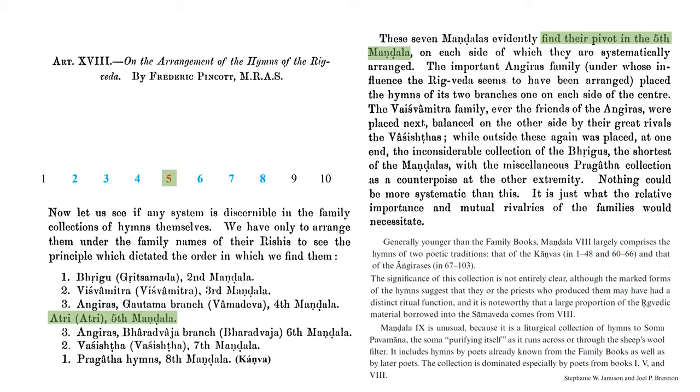The important Angirasa family, under whose influence the Rigveda seems to have been arranged, placed the hymns of its two branches, one on each side of the centre. The Veshwamitra family, ever the friends of the Angirasa, were placed next, balanced on the other side by their great rivals, the Vasishtas. While outside these, again was placed at one end the inconsiderable collection of the Brigus, the shortest of the Madalas, with the miscellaneous Pragata collection as the counterpoise at the other extremity. Nothing could be more systematic than this.